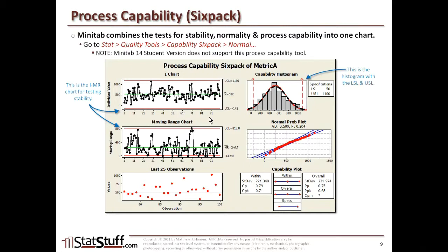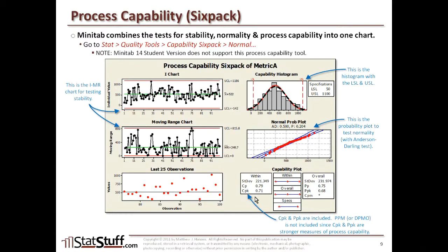In this case, we already knew the process was stable. The six-pack refers to six different blocks. In the upper right block, we have the histogram of the distribution between the lower and upper spec limits. Beneath that, the probability plot tests the normality of the data, giving us Anderson-Darling values — this data looks normal, so it's okay to use this type of analysis. At the bottom, we get the results for the actual process capability, showing the CPK and PPK. What's missing compared to the original process capability chart is the DPMO, but CPK and PPK tend to be stronger measures, and a value less than one tells us the process is not capable.